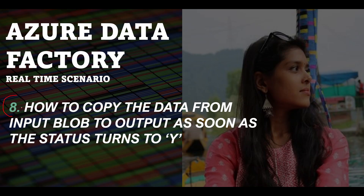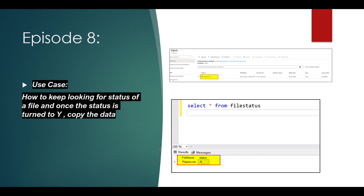Hi friends, welcome to Azure Content. This is part 8 in the Azure Data Factory real-time scenarios playlist. In this video, we are going to learn how to copy data from an input blob to output as soon as the status turns to Y. So in my input container in ADLS, that is Azure Data Lake Storage, we have a file called players.csv, and we need to copy this file from the input container to the output container.